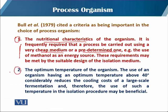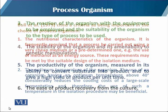The second criteria is the optimum temperature of the organism. The use of an organism having an optimum temperature above 40 degrees Celsius considerably reduces the cooling cost of large-scale fermentation, and therefore the use of such a temperature in isolation procedures may be beneficial. One critical point is that the growth temperature of the organism should match the local environment. Taking Pakistan as an example, since most temperatures remain above 25 degrees Celsius, we should select organisms accordingly so that less effort and cost is involved in temperature control.